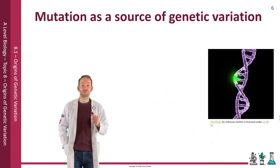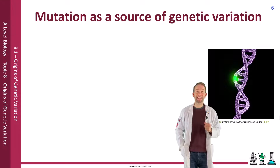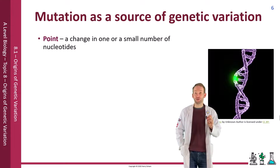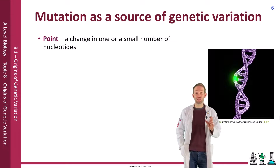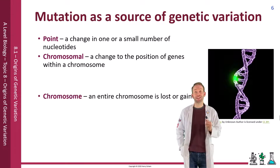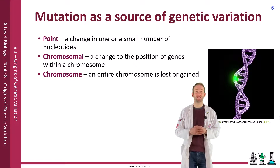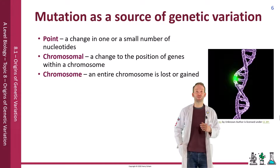There is also a potential source of mutation which can add further variation. A mutation is a permanent change in the DNA of an organism. There are three main types of mutation: point mutations, which are a change in one or a small number of nucleotides; chromosomal mutations, a change to the position of genes within a chromosome; or chromosome mutations, where an entire chromosome is lost or gained. Most mutations are not beneficial, but when there is an environmental change, a new variation caused by mutation could become an adaptation. In this way, they are the source of evolutionary change.